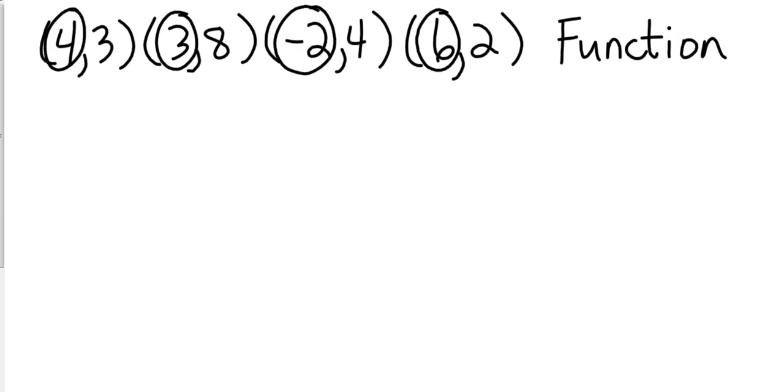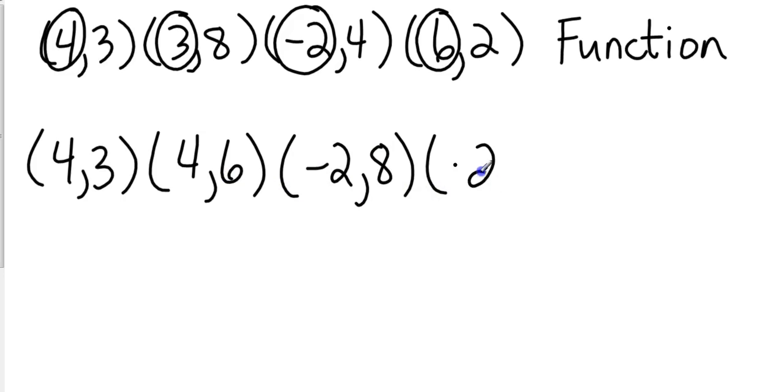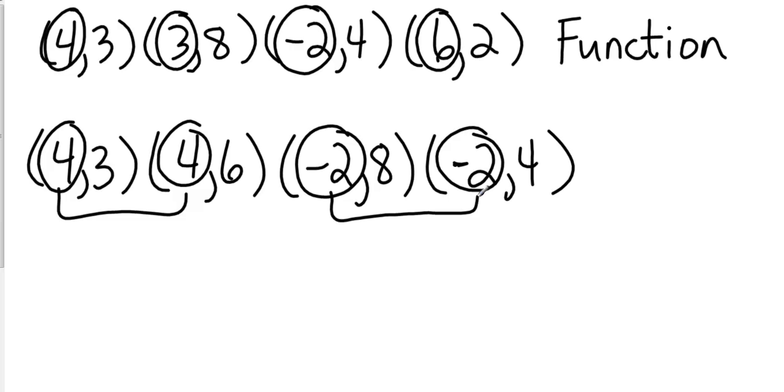is a function. If each domain is different, then it is paired with exactly one range. Now let's look at this one. We're going to notice we have two of the same X coordinates there and two of the same X coordinates there. Are they paired with exactly the same Y coordinates? Are 3 and 6 exactly the same? Well, of course not. Are 8 and 4 exactly the same? Of course they're not. So since they are not paired with the exact same range, then this is not a function.